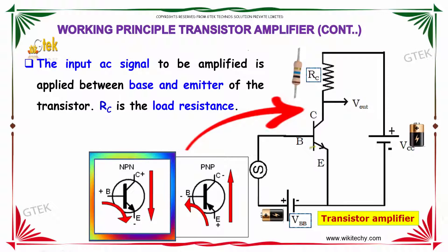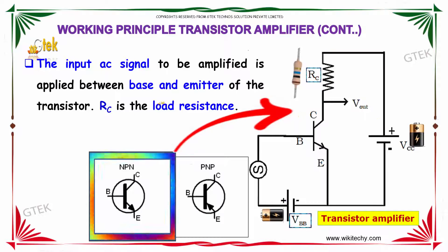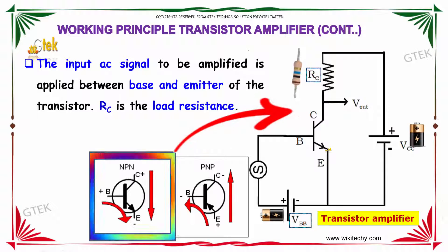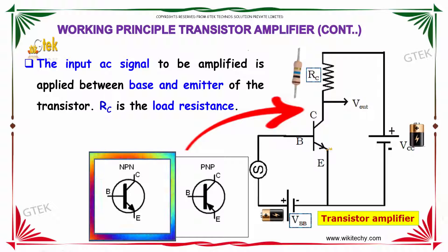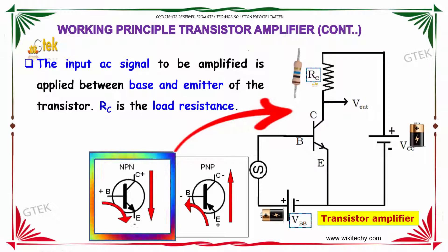This is how the working principle of transistor amplifier is. The input AC signal to be amplified is applied between the base and the emitter of the transistor. And RC is the load resistance.